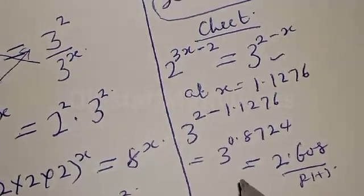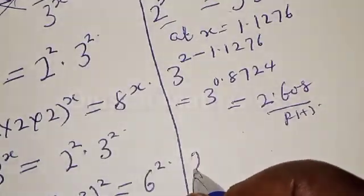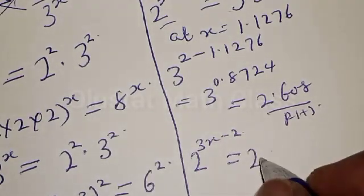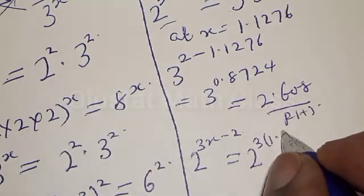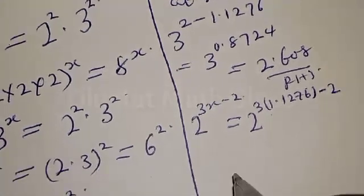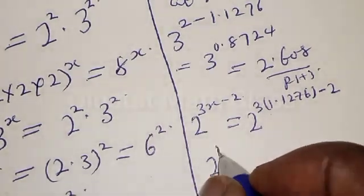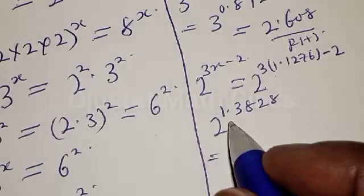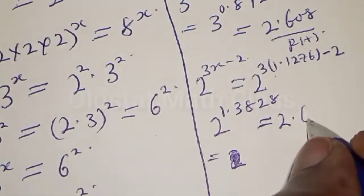Let's also look at the left-hand side to see if it equals the right-hand side. We have 2 raised to power 3x minus 2, with x equal to 1.1276. So we have 2 raised to power 3 times 1.1276, minus 2. That gives us 2 raised to power 1.3828, and 2 raised to power 1.3828 is equal to 2.608.